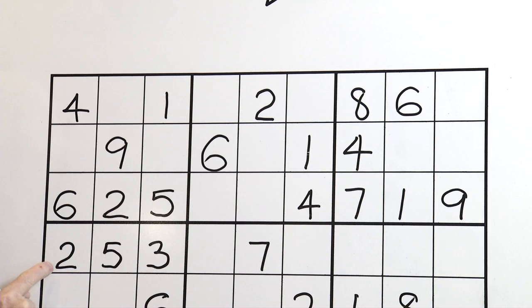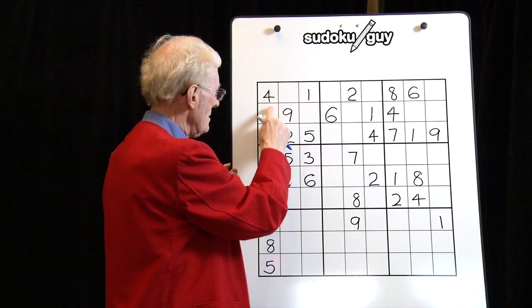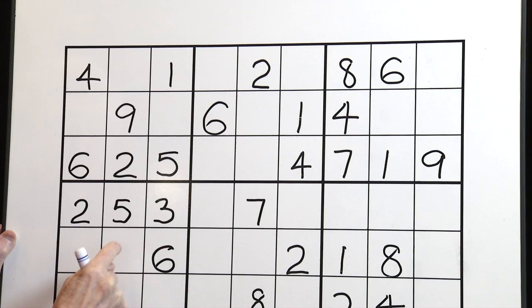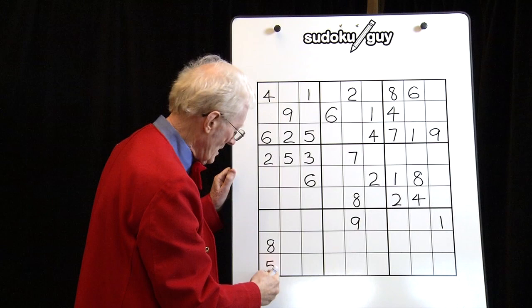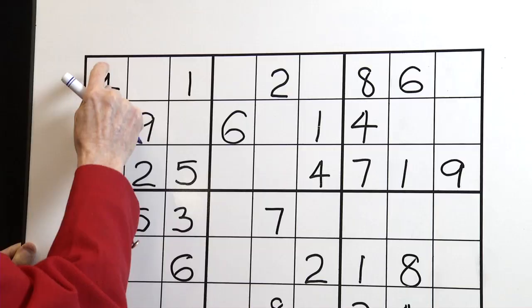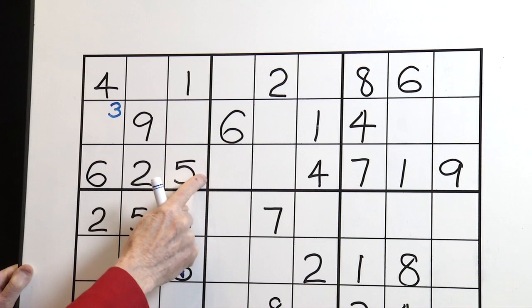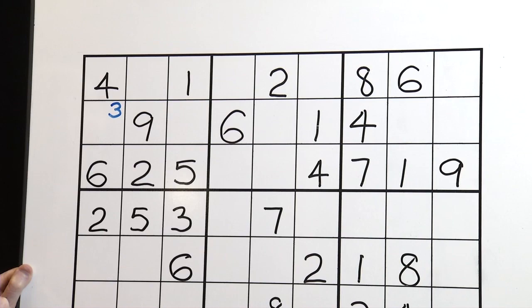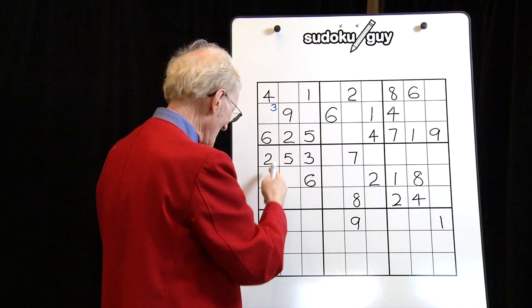So we look at this cell here. Is there a one in this block? Yes there is, so it cannot be a one - we can't have a repeated number in a row, column, or block. Let's take two. There's a two down here, so you can't have a two there either. What about three? Is there a three in the block? No. Is there a three down in this column? No. So a three is a possibility. Four is already in that block. Five is already there. Six can't go either. Is there a seven in this block? No. Is there a seven down here? No. So a seven is a possibility.